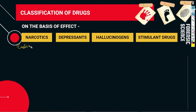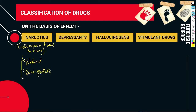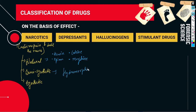Now the second classification is on the basis of effect. First come narcotic drugs — those drugs that relieve pain and dull the senses. We classify narcotic drugs into three types: natural narcotics include heroin, codeine, opium, and morphine; semi-synthetic narcotics include tramadol and hydromorphone; and synthetic narcotics include methadone.